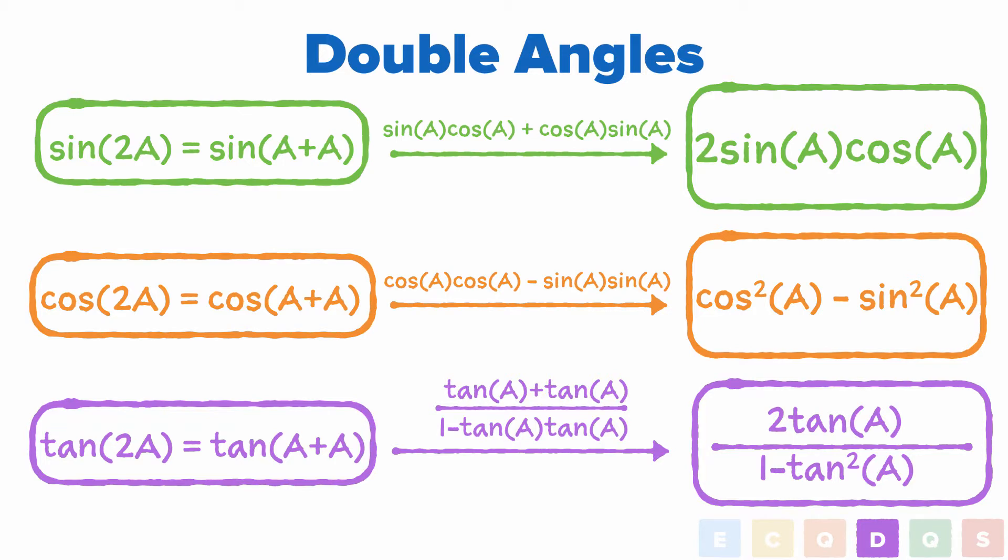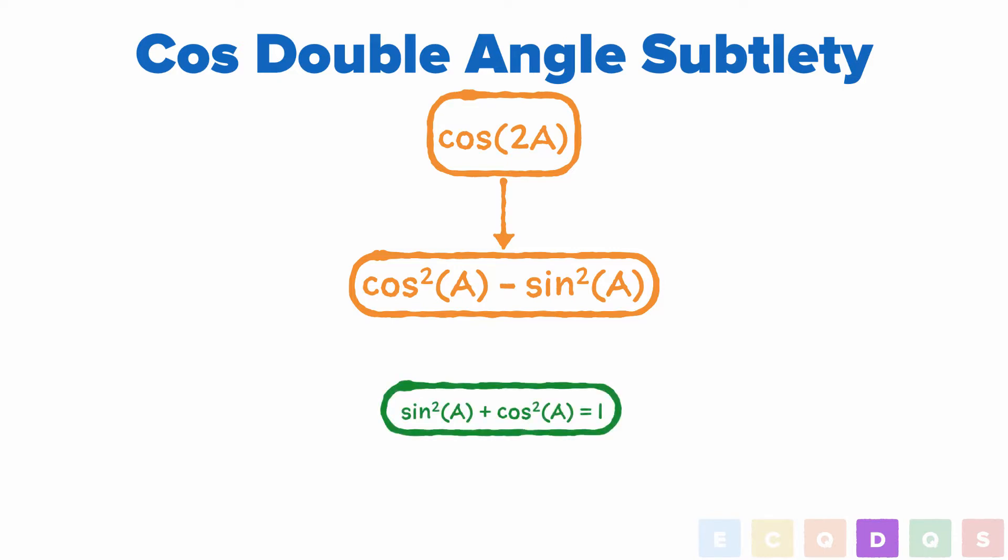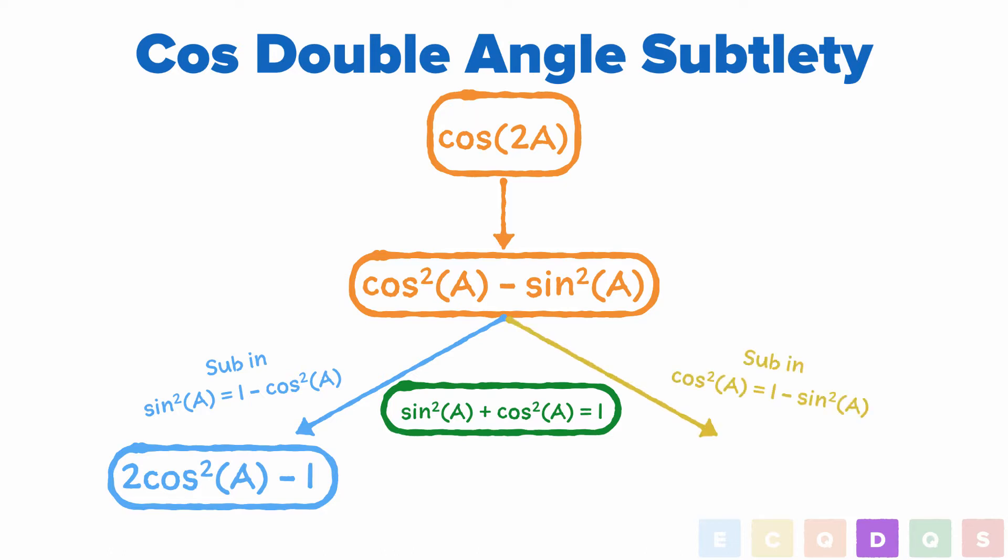Now that's all well and good, but there's an important subtlety that we have to take notice of, and it's to do with our cos formula. We have cos 2a is equal to cos squared a minus sine squared a. But we also know that sine squared a plus cos squared a is equal to 1. So we can write our formula for cos 2a in two further different ways. If we sub in that sine squared a is equal to 1 minus cos squared a, we get cos 2a is equal to 2 cos squared a minus 1. And if we sub in cos squared a is equal to 1 minus sine squared a, we get that cos 2a is equal to 1 minus 2 sine squared a. Now this is pretty annoying, but it's really important for integrating sine squared x and cos squared x. So it's important that you remember that cos 2a can be written in these three different ways.